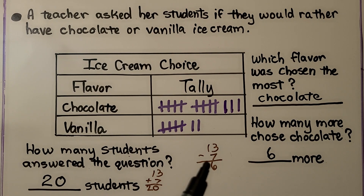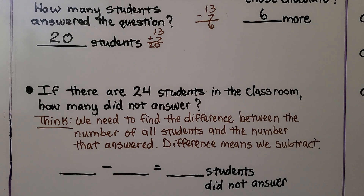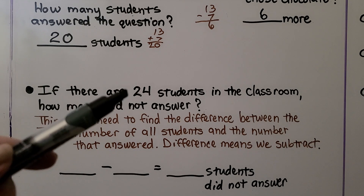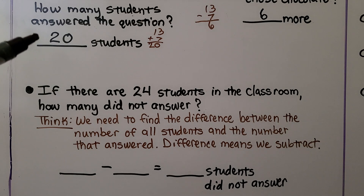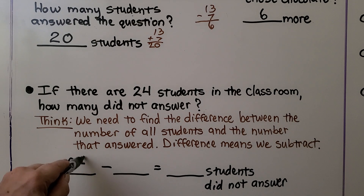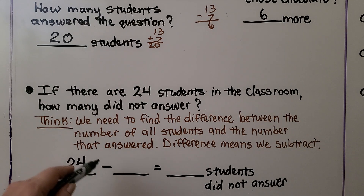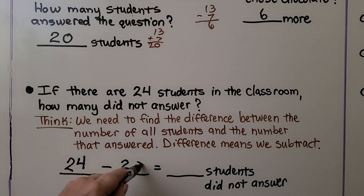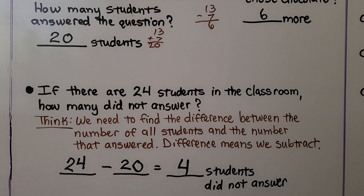To find how many more chose chocolate, we needed subtraction. To find how many students answered the question, we needed addition. If there are 24 students in the classroom, how many did not answer? We find the difference between all the students — 24 — and the number that answered. We subtract: 24 minus 20 means four students did not answer.